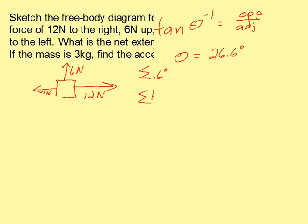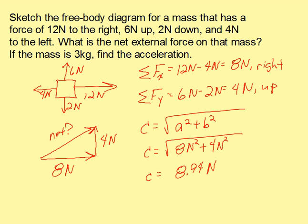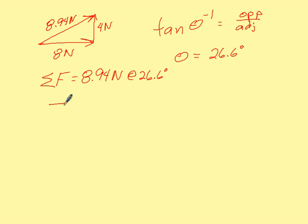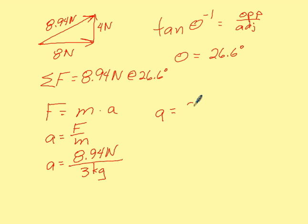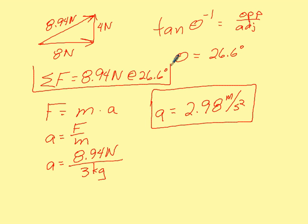Going back to what else the problem asked: we found the net external force. Since the mass is 3 kilograms, we now find the acceleration using Newton's second law. Force equals mass times acceleration, so acceleration equals force divided by mass. The acceleration is 8.94 newtons divided by 3 kilograms, giving us an acceleration of 2.98 meters per second squared.